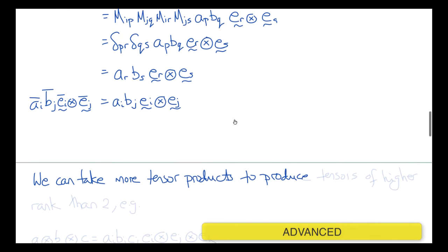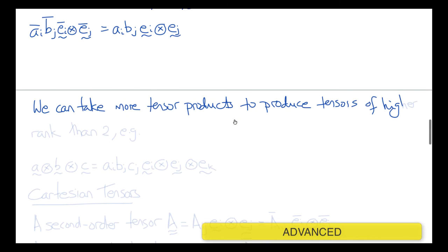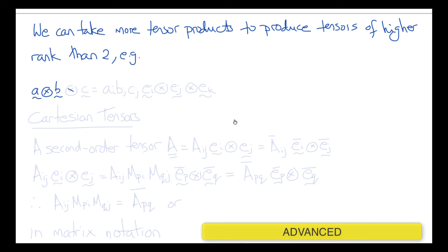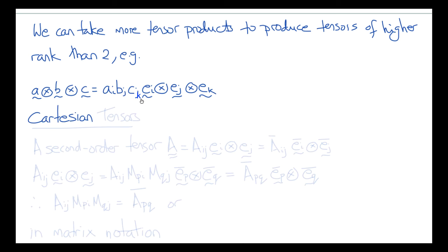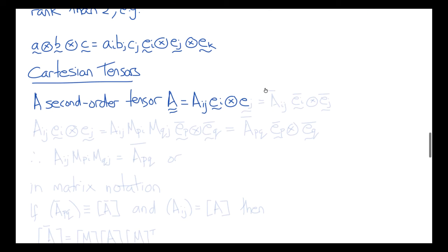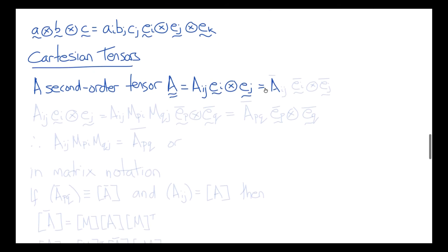We don't have to stop at rank-2 tensors. We could define a rank-3 tensor from three vectors by taking the dyadic product A dyadic B dyadic C, which gives Ai Bj Ck times Ei dyadic Ej dyadic Ek — a 3×3×3 array, or a rank-3 tensor. We'll occasionally encounter higher-order tensors, but most of the time we work with second-order tensors.